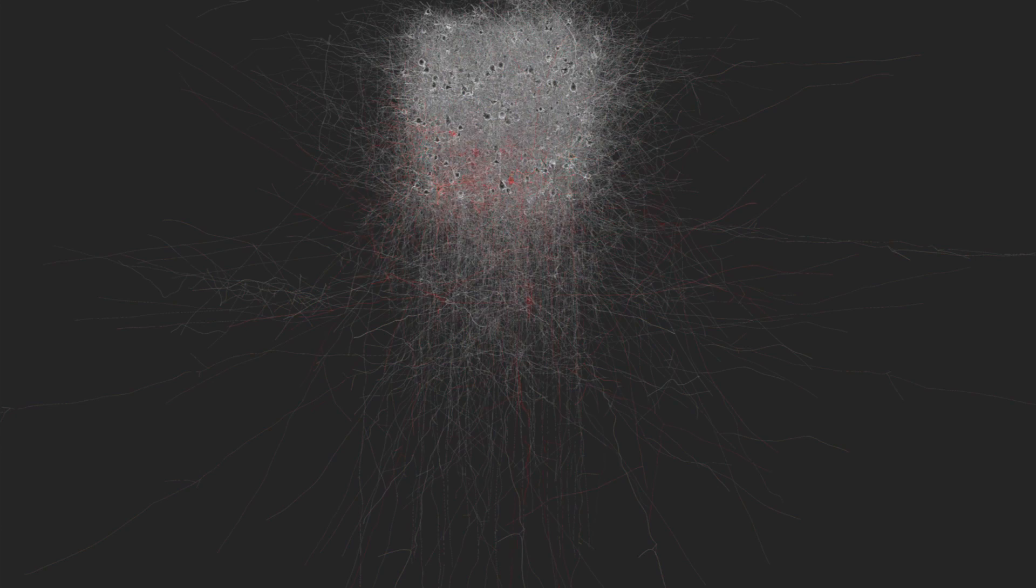The reconstruction begins with the placement of neuronal morphologies in a three-dimensional virtual volume, according to experimentally observed densities and proportions. An algorithm ensures that the placement of axons and dendrites is consistent with cortical architecture.